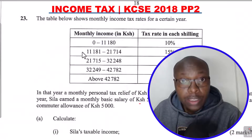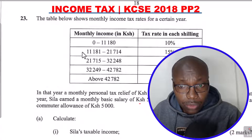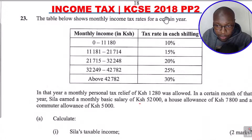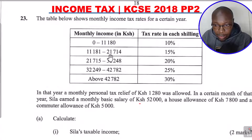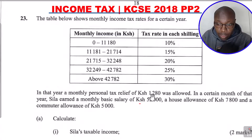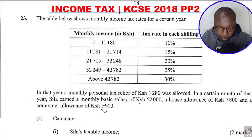Hello and welcome to the lesson. This lesson is about solving a problem on income tax — KCC 2018, Paper 2, Question 23. The table below shows monthly income tax rates for a certain year, with monthly income and tax rate in each shilling shown as percentages. In that year, a monthly personal tax relief of 1,280 was allowed. In a certain month, Sila earned a monthly basic salary of 52,000 shillings, a house allowance of 7,800, and a commuter allowance of 5,000.